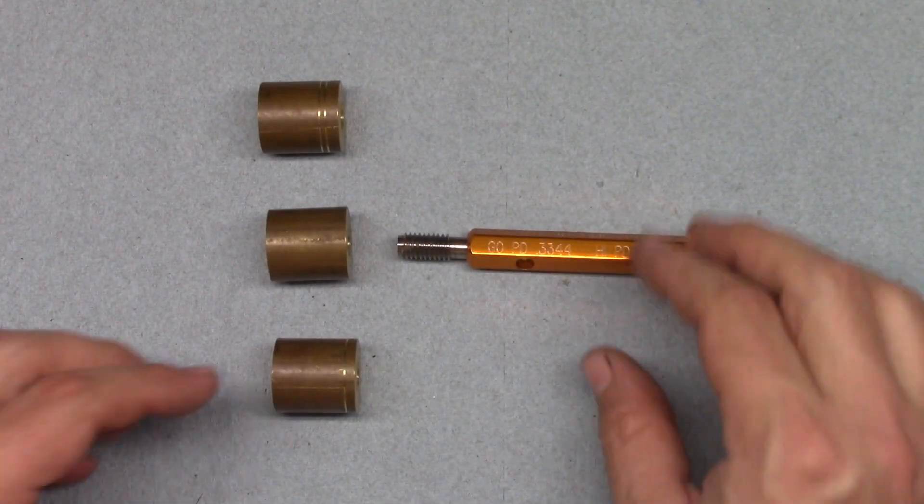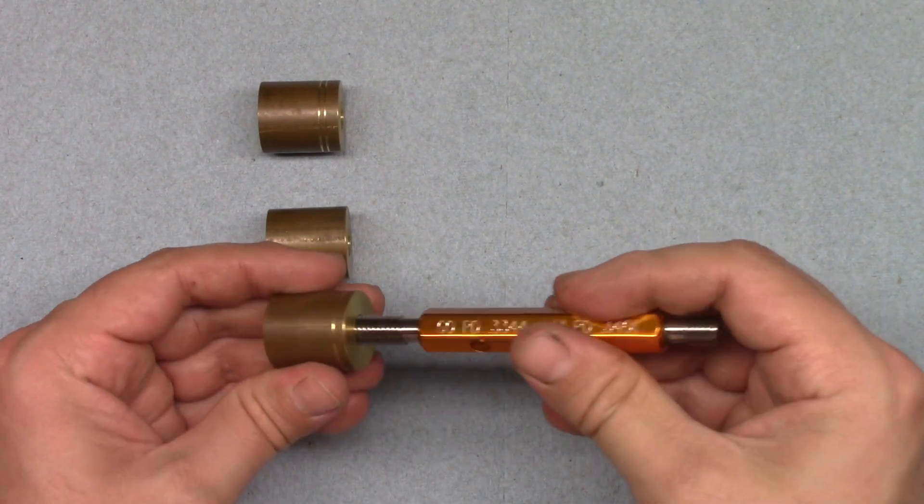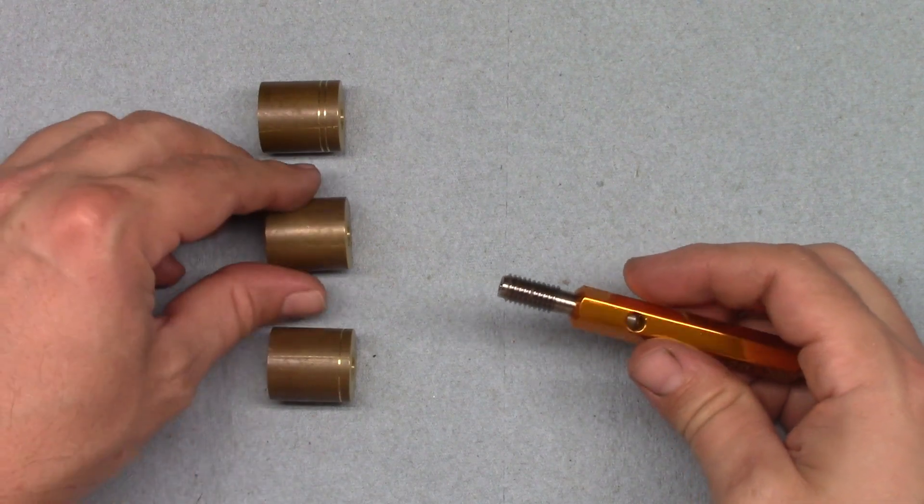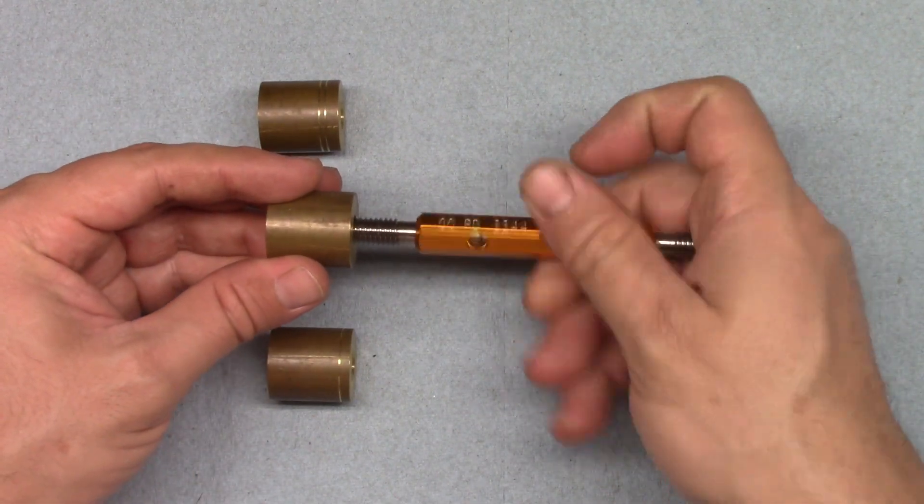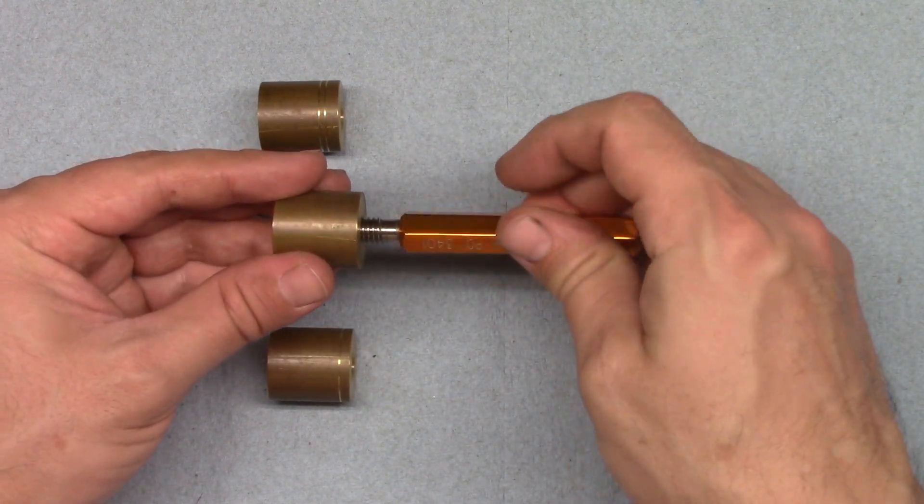In practice, they are used in the same way as the ring gauges. You try to thread them into your part, and if the go gauge does not thread in, your thread is still too small. If it does, you are at least bigger than the small end of the range, and you then check it with the no-go gauge.